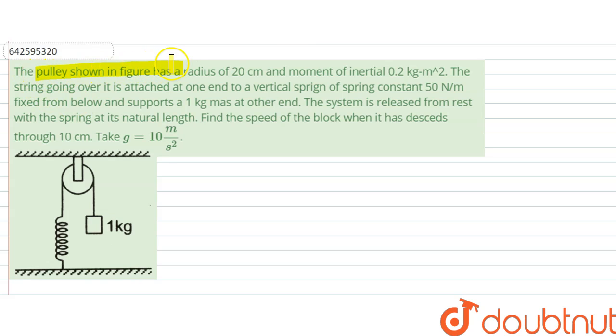Hello. We are given with the question and the question says the pulley shown in the figure has radius of 20 centimeter and moment of inertia 0.2 kg per meter square. The string going over it is attached at one end to a vertical spring of constant 15 newton per meter fixed from below and supports a 1 kg mass at the other end. The system is released from rest with the spring at its natural length. Find the speed of the block when it has descended through 10 centimeter.